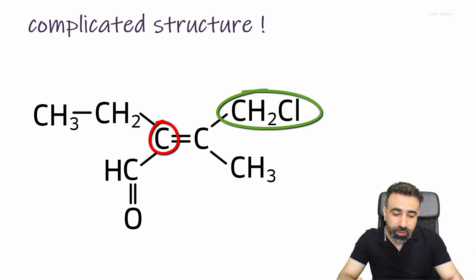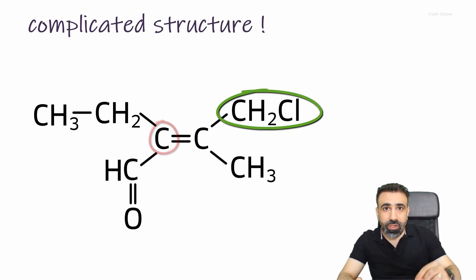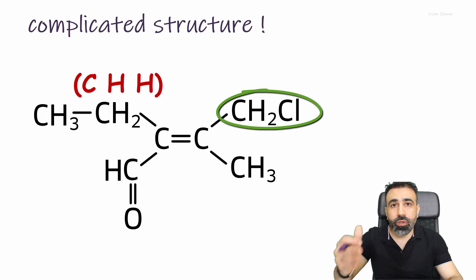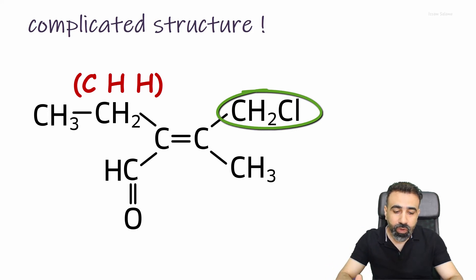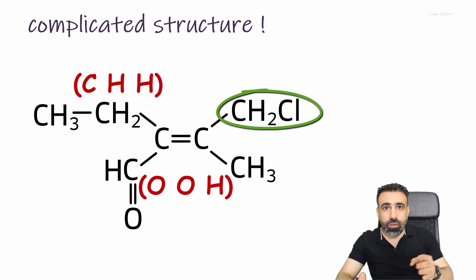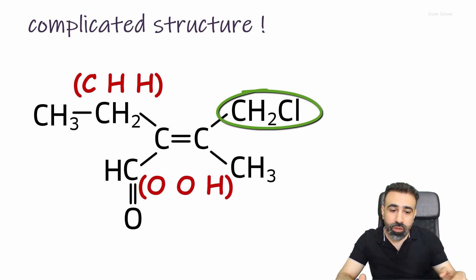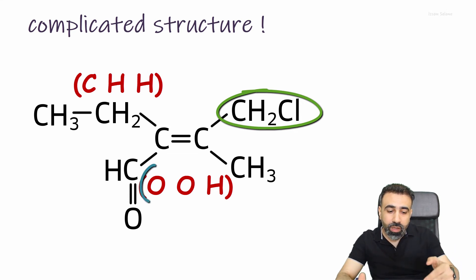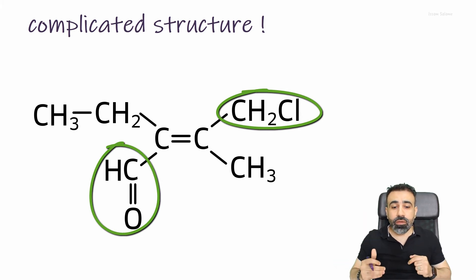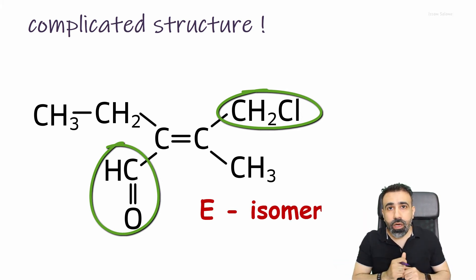Now looking at the left end of the double bond, the carbon is also attached to two carbons. The carbon at the top is joined to carbon, hydrogen, hydrogen, while the carbon at the bottom is joined to oxygen, oxygen, hydrogen — because it forms a double bond with oxygen. Since oxygen has a higher atomic number, the carbon at the bottom has higher priority. The two higher-priority groups are on opposite sides of the double bond, so this structure is called the E-isomer.